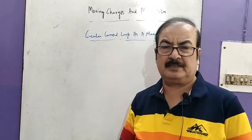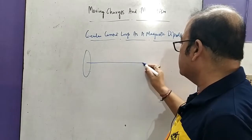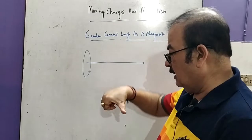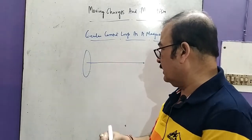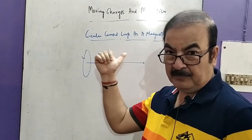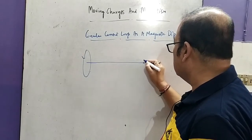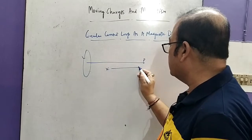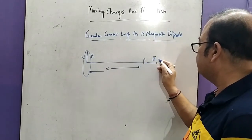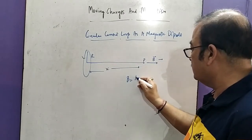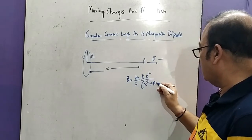We have seen in previous lectures that if we have a circular loop, then on its axis we can find the direction of magnetic field given by the right-hand thumb rule. If the current flows in the direction represented by all four fingers in round form, then the direction of the thumb gives the direction of the magnetic field. At point P, if the axial distance is x and the loop radius is r, the value of magnetic field is μ₀/2 · ir²/(x² + r²)^(3/2).